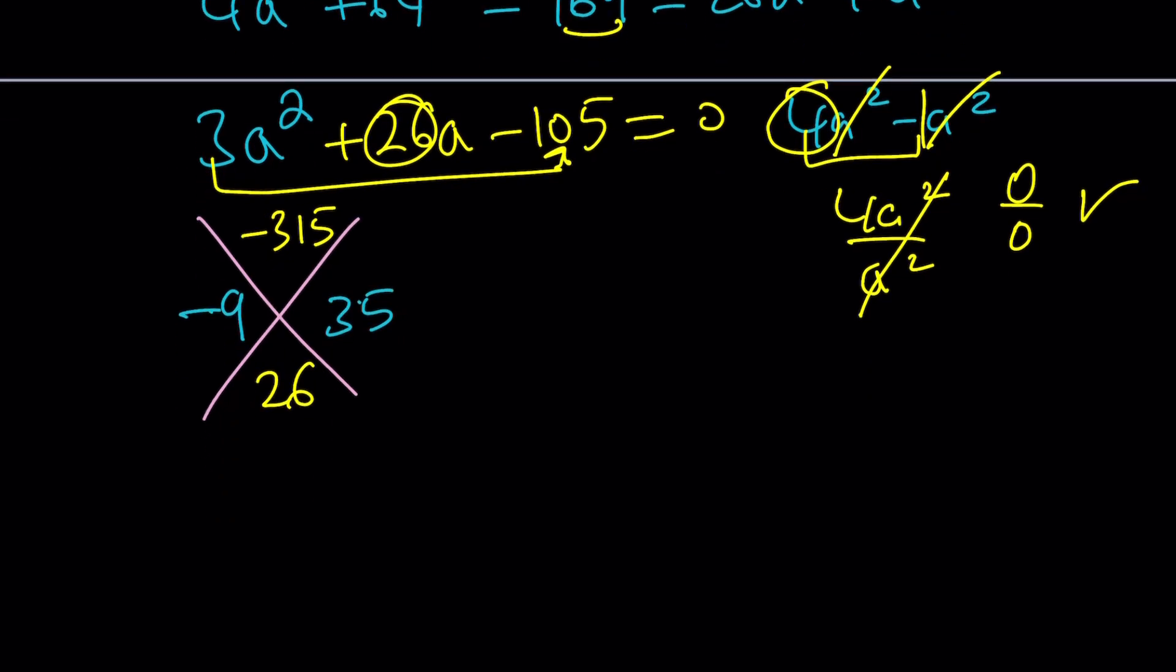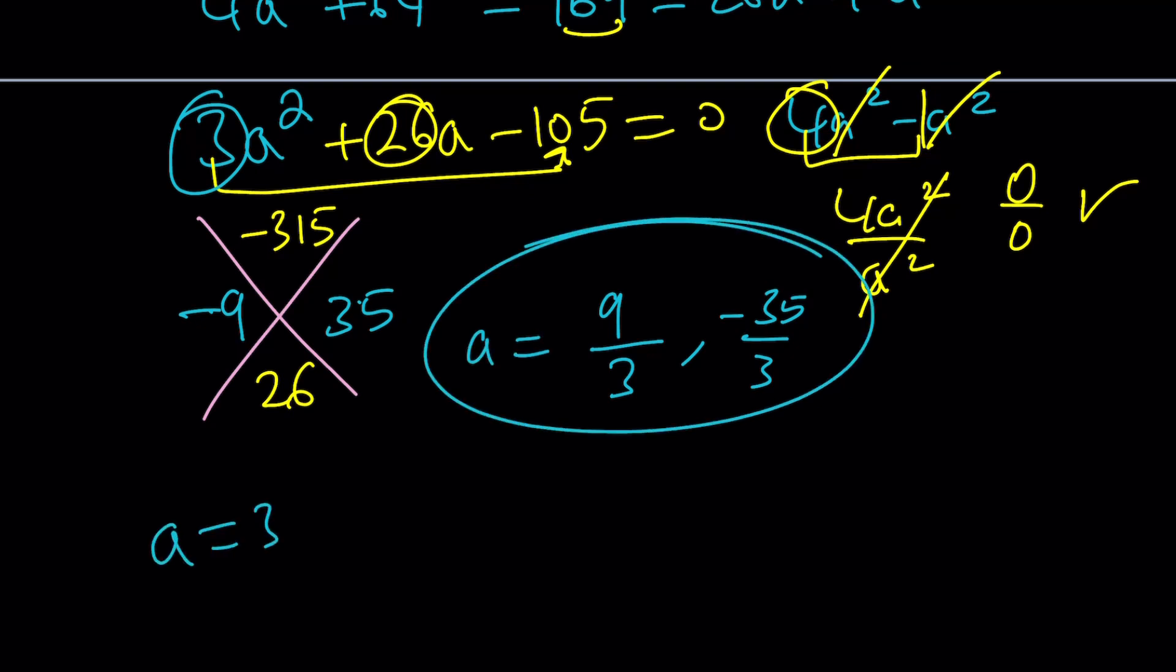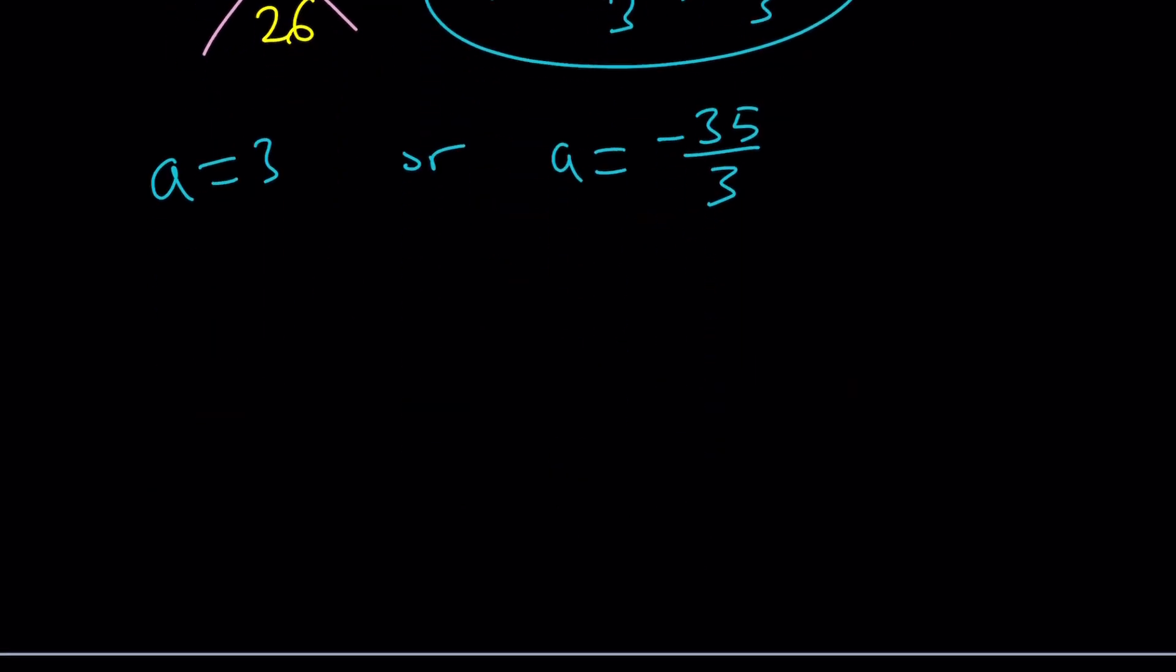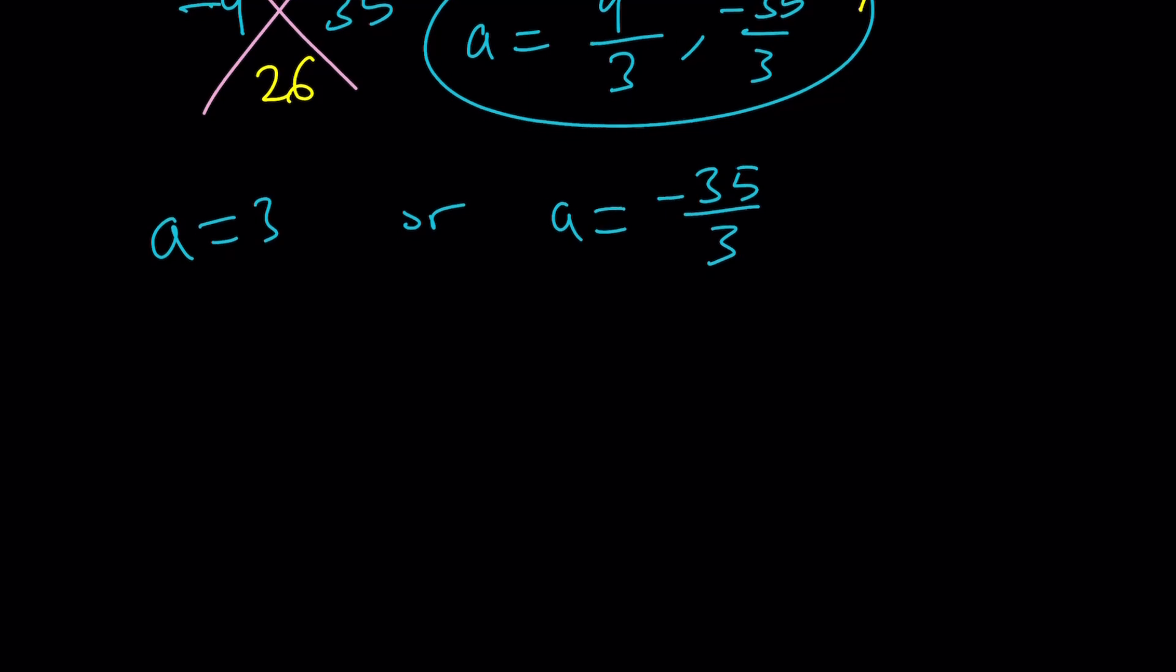Now here's the shortcut. You take the opposite of these numbers, like 9 and negative 35. Divide them by the coefficient of a squared which is 3. And these are going to be the a values. There you go. So a can be 3 or a can be negative 35 thirds. It's like how did this become? Don't worry. We'll talk about that later. For right now those are the solutions.